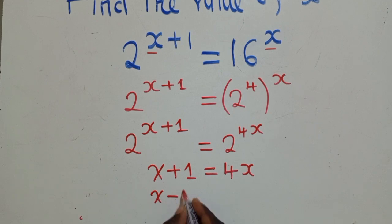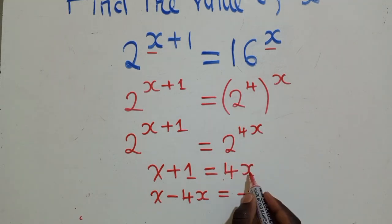Group the like terms. You can see what is happening here. So we subtract 4x from both sides and this is what we're going to get.